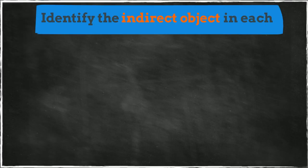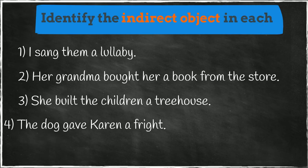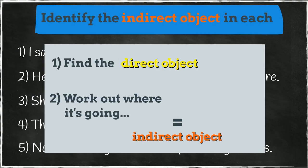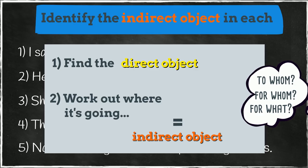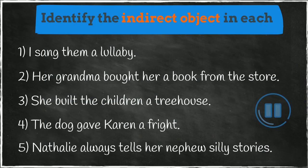Now it's your turn to have a go. Read the following sentences and identify the indirect object in each. Remember, start by finding the direct object and then work out where the direct object is going by asking yourself: to whom, for whom, or for what. Pause here while you work.